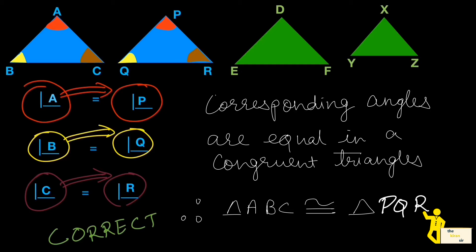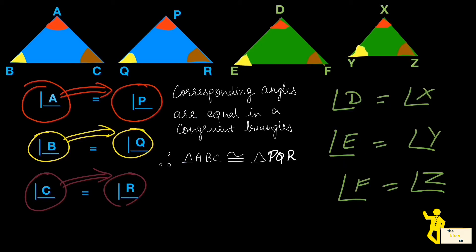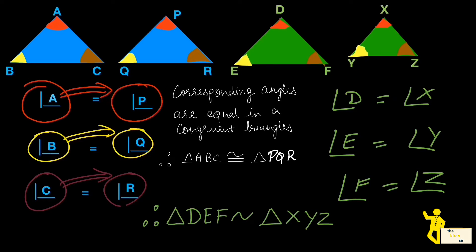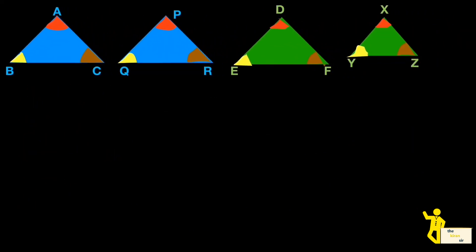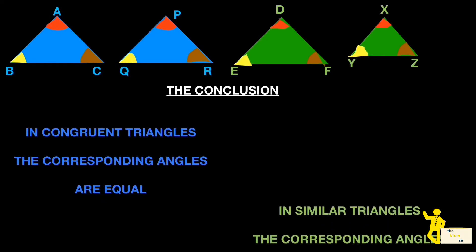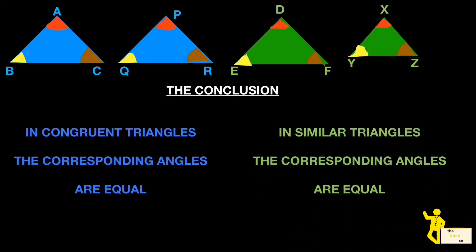The same rule applies for similar triangles. In similar triangles, corresponding angles are also equal: angle D equals angle X, angle E equals angle Y, and angle F equals angle Z. You write it the same way — triangle DEF is similar to triangle XYZ. The only difference is the symbol used: the congruent sign is different from the similar sign. So as far as angles are concerned, there is no difference between congruent and similar triangles.